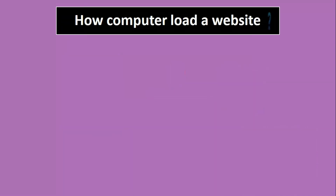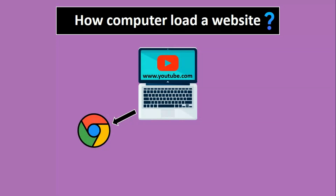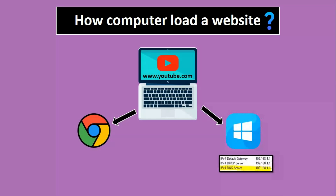How does a computer load your website? When we try to access a web page like www.youtube.com, first it checks the browser cache, then it checks the Windows operating system. The OS checks the local DNS cache to see if it already has the IP address for the domain stored. If the IP address is found, it skips the next step. If the local cache does not have the required information, the DNS resolver comes into the picture.